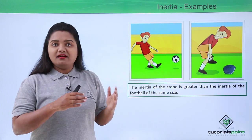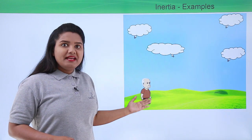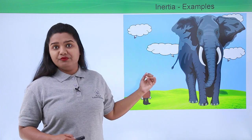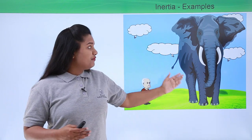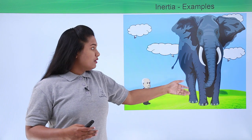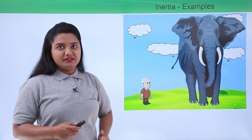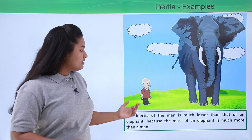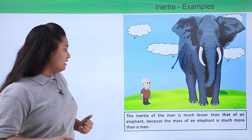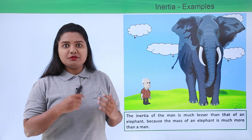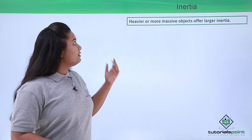For the same reason, it is much easier to move a man than to move an elephant, because these two are of very different masses. There is a huge difference between the masses of an elephant and a man, so there is a difference in their inertia. We conclude that the inertia of a man is much less compared to the inertia of an elephant, because the mass of an elephant is much greater than that of a man.